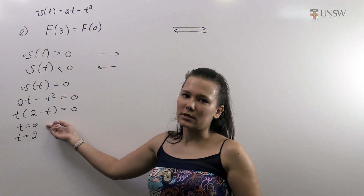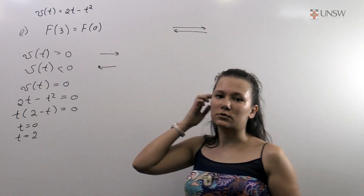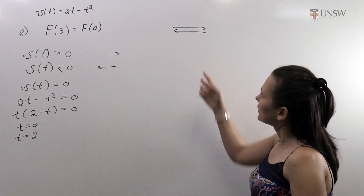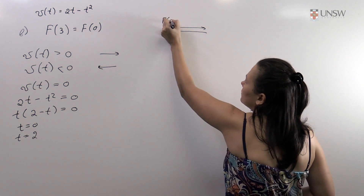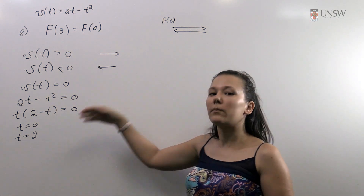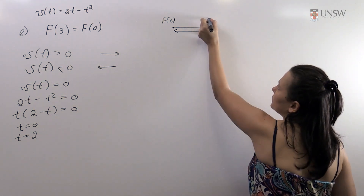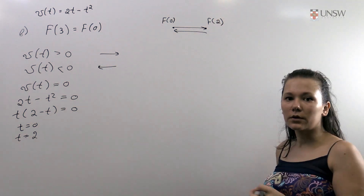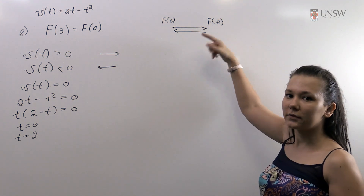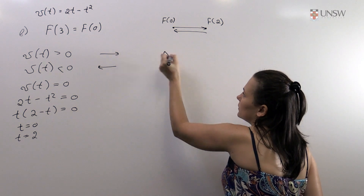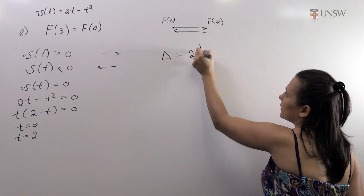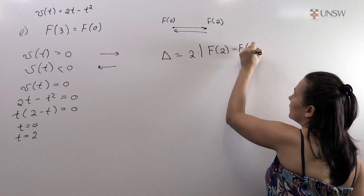We do not take t equals zero since we need the total distance traveled in three seconds, so we take t equals 2. Looking at this picture: from t equals 0 to t equals 2 our particle moves in the positive direction, going up to f(2), and then returns back to f(0). So the total distance is double the distance between f(0) and f(2), which we can write as twice the absolute value of f(2) minus f(0).